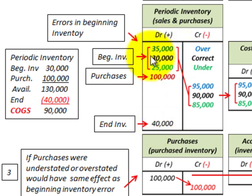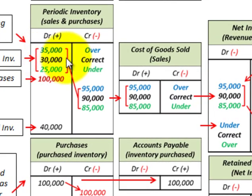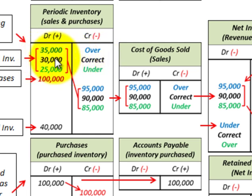We're going to look at errors in our beginning inventory — this is where we'll have a fluctuation. Our purchases at $100,000 and ending inventory at $40,000 are both correct. The variation is in our beginning inventory. The best way to see how overvalued or undervalued inventory affects accounts is to compare against the correct amount. The correct beginning inventory should be $30,000; we'll examine an overvalued amount of $35,000 and an undervalued amount of $25,000.